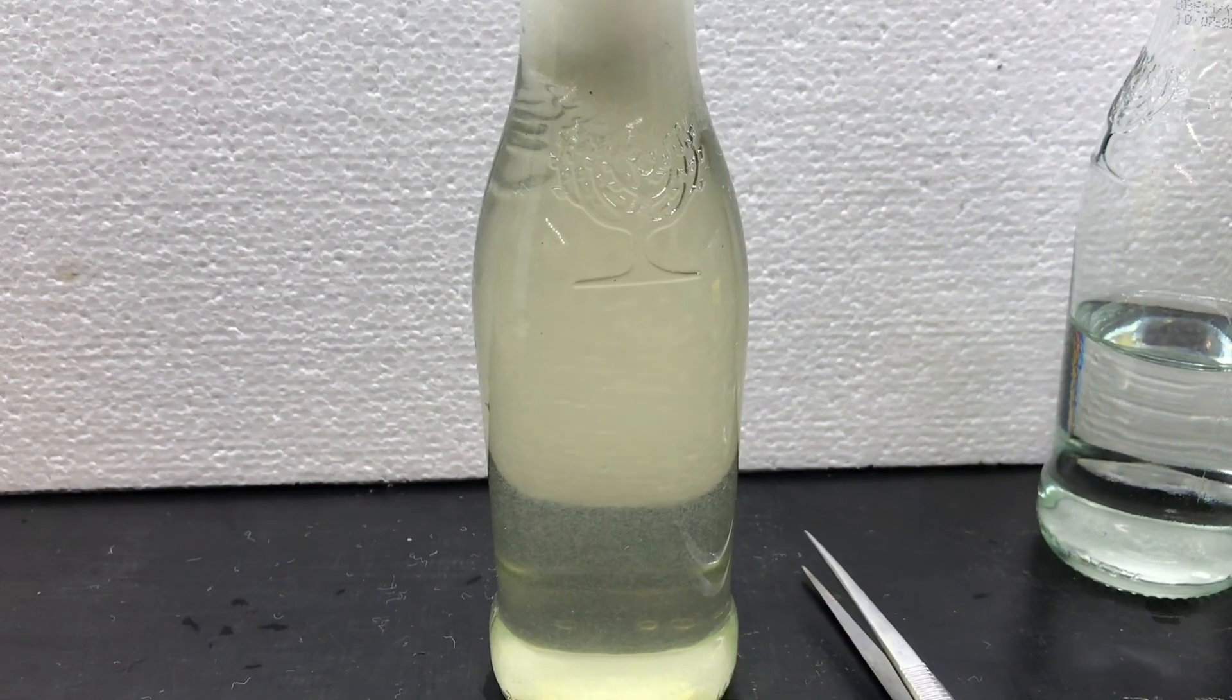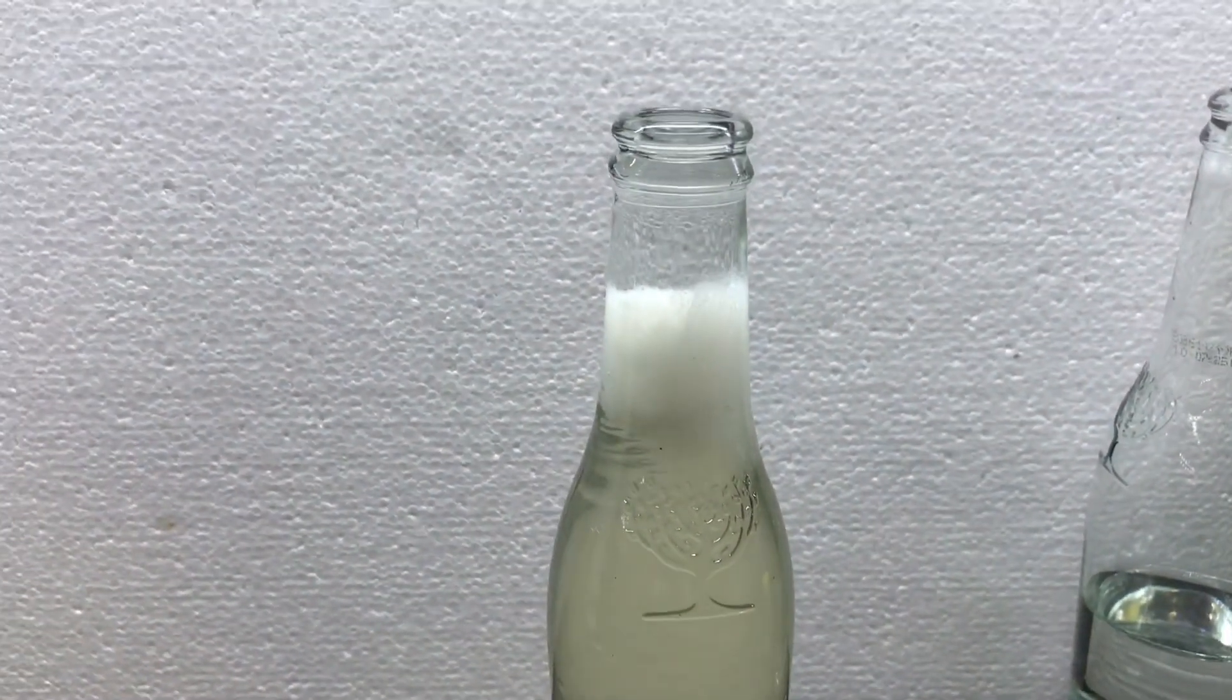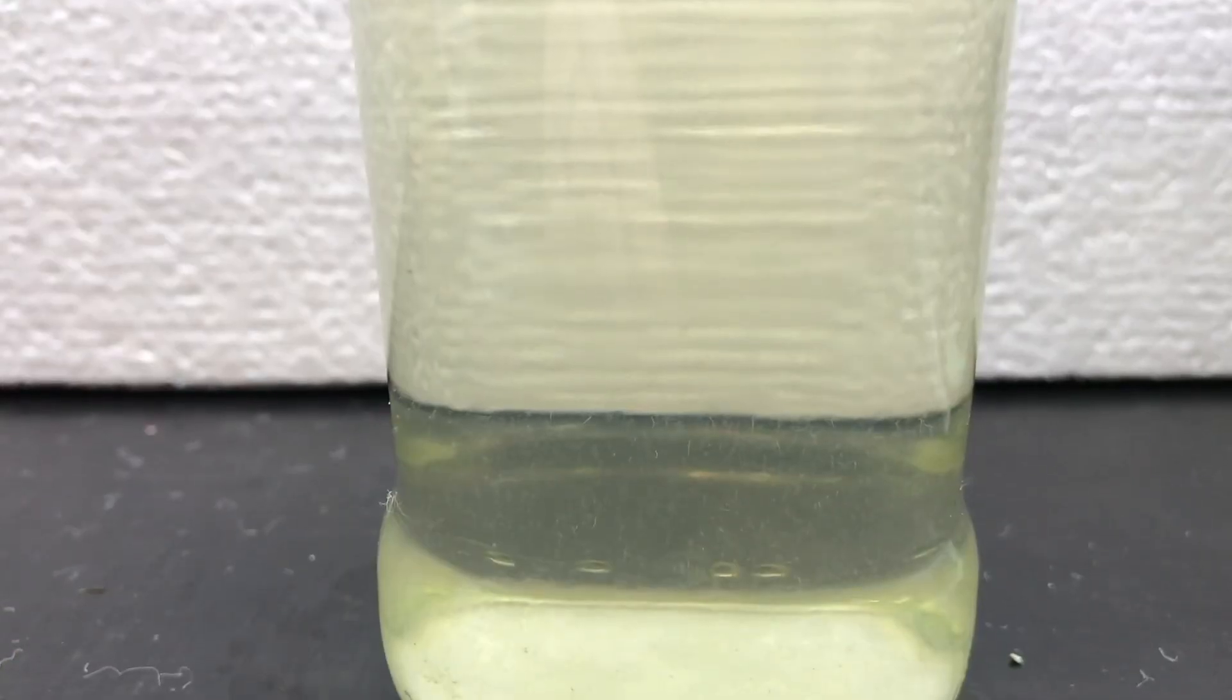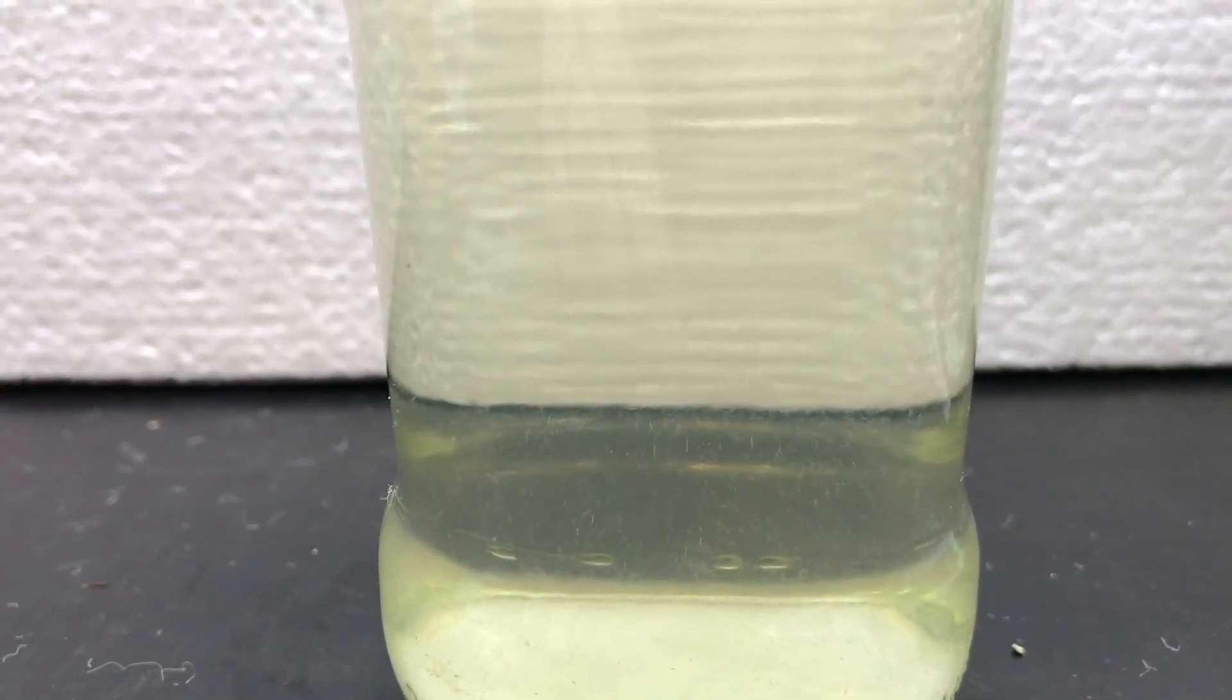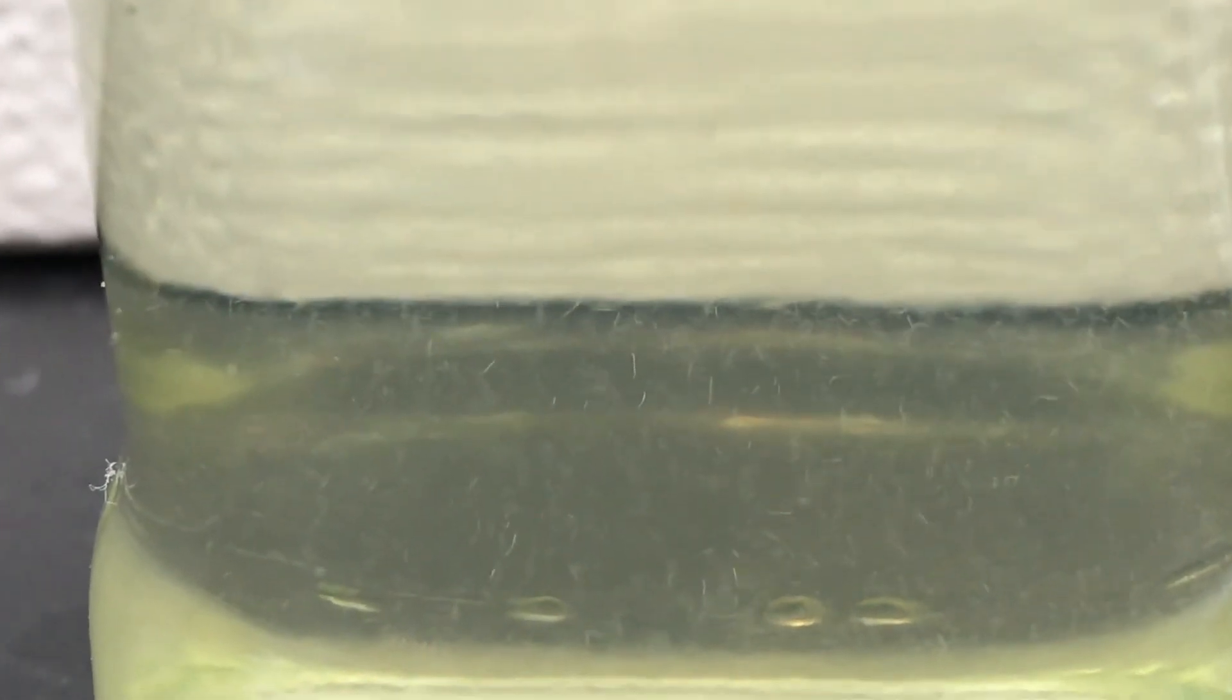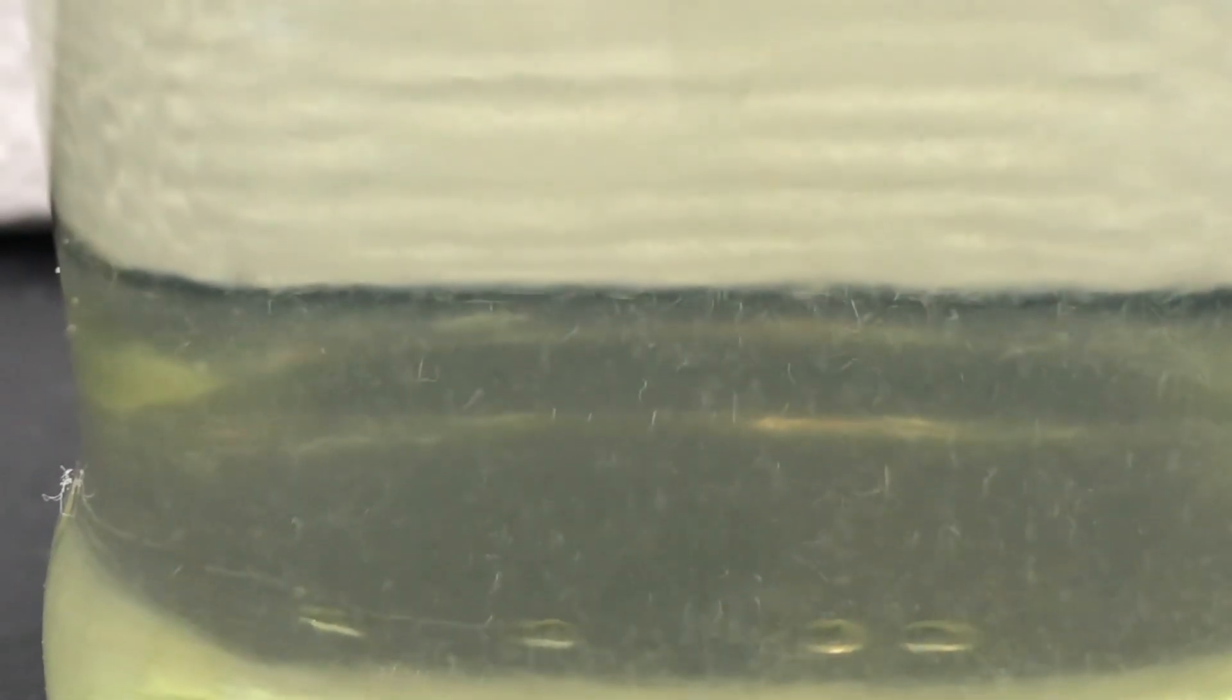And here hopefully you can see vinegar eels in this bottle, and hoping relatively quickly we're going to have the vinegar eels migrate to the top where we can actually use the water to feed to fry. So here you can see the vinegar eels hopefully.